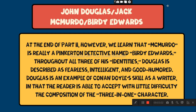During this story within a story, we learn that Douglas once bore the name Jack McMurdo and that he was part of a notorious gang in the United States, not unlike the mafia. At the end of part two, we learn that McMurdo is really a Pinkerton detective named Birdie Edwards. Throughout all three of his identities, Douglas is described as fearless, intelligent, and good-humoured. Douglas is an example of Conan Doyle's skill as a writer in that the reader is able to accept with little difficulty the composition of the three-in-one character.